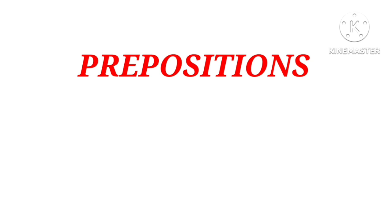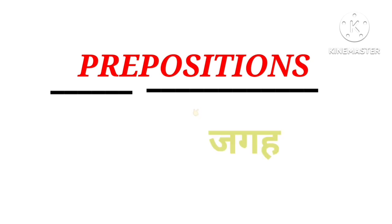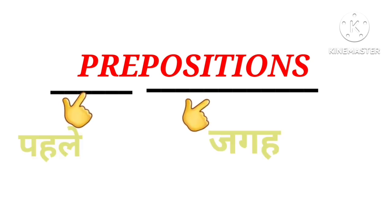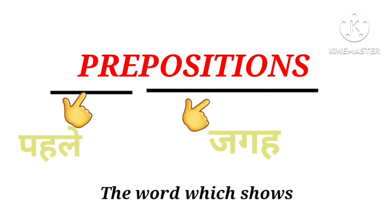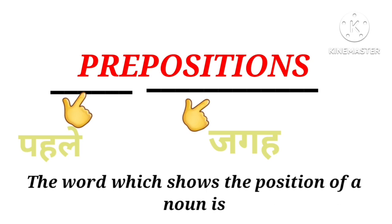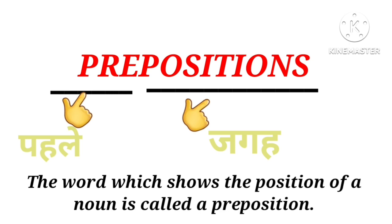Prepositions. Aap kya samajhtay hai prepositions se? Agar ham is word ko separately read karenge, which means 'pre' and 'position'. Pre means pehle and position means jaga. To hum kya bol sakte hai? The word which shows the position of a noun is called a preposition. Usko hum preposition bol sakte hai — matlab, joh noun ki position batay hai, usko hum preposition boltay hai.